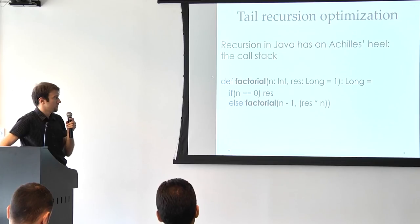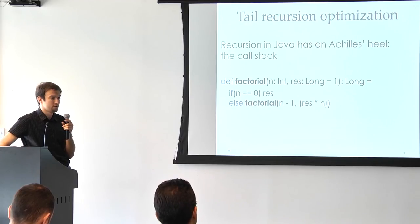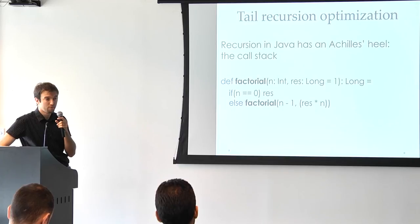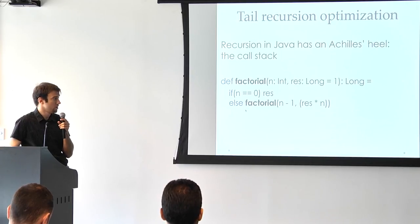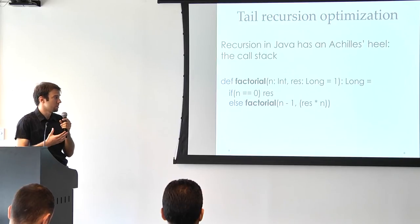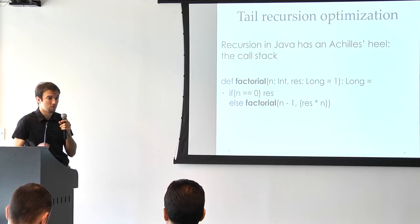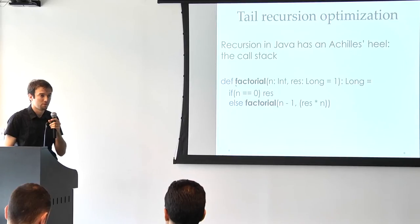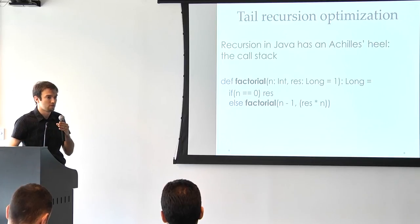So one Achilles heel of Java would be the tail recursion. So if I need to compute factorial of a very large number in Java, I would just get the stack overflow. We have a tail recursion optimization as built-in in Scala. So whenever the compiler can prove basically that it's a tail recursion, basically it will transform it to a while loop instead of a recursion. And it will basically save us from additional frames and stack allocations.